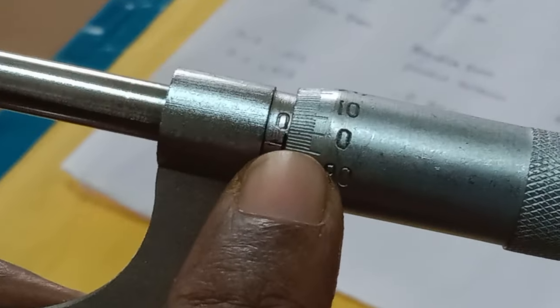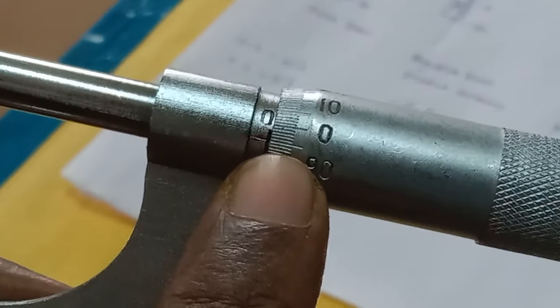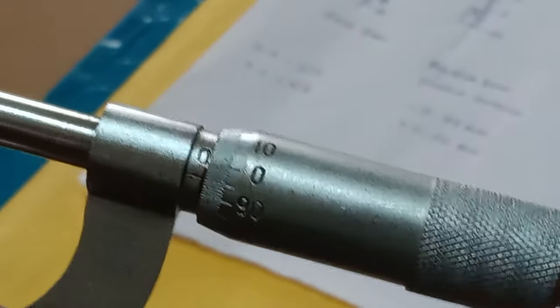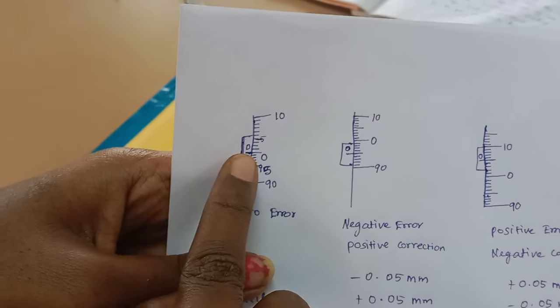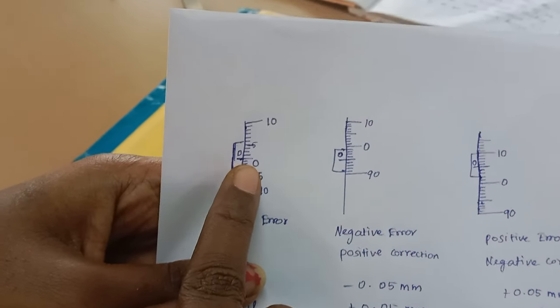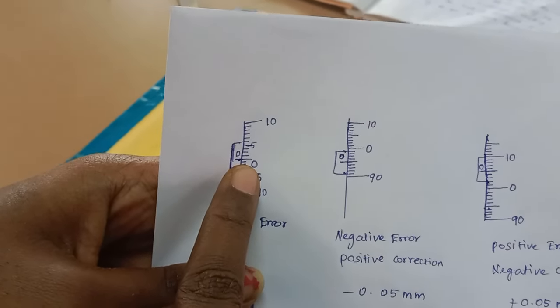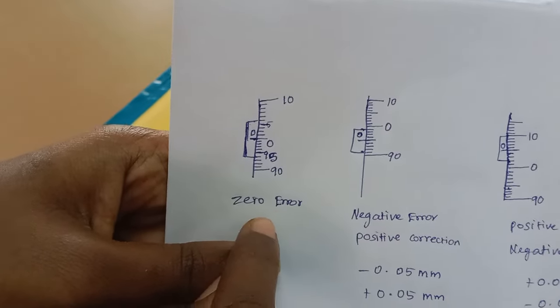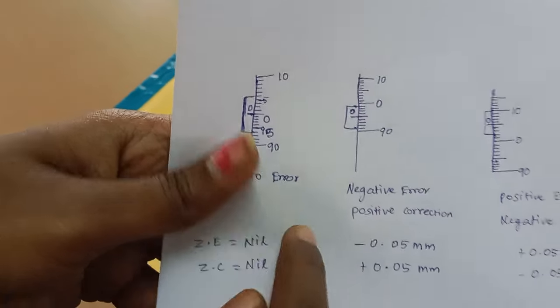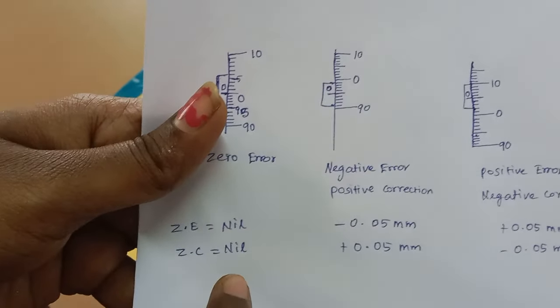The error is negative, so if we manage this, we will add plus. You can see the picture here. That means there is zero here — head scale is zero. That is the error and correction.